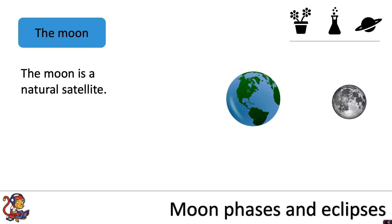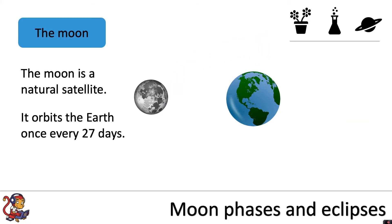The Moon is a natural satellite of the Earth. It orbits the Earth once every 27 days and it spins anti-clockwise and has an anti-clockwise orbit.